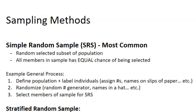Number two is you have to randomize — that's why it's called a random sample. You can do randomization through a random number generator, put people's names in hats, whatever. And number three is simply selecting members of the sample for your simple random sample.